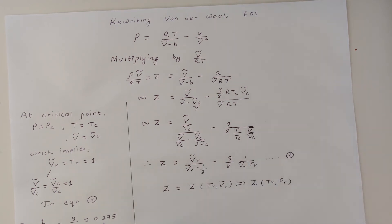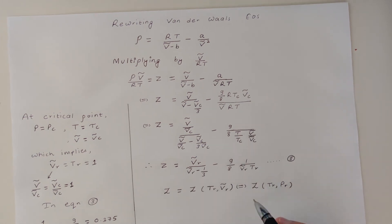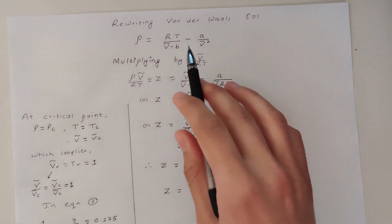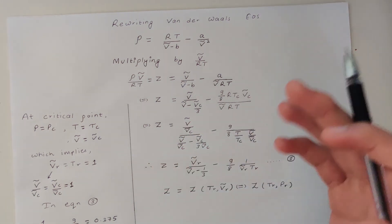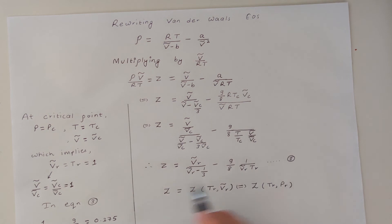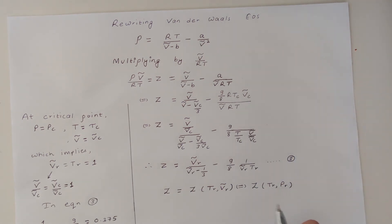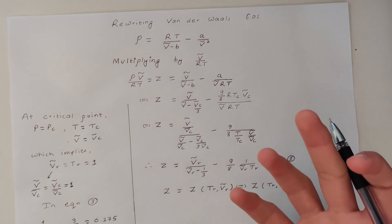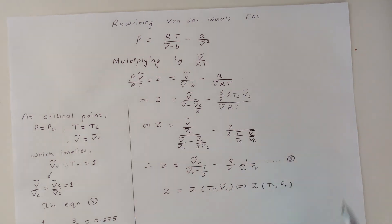This is exactly what the principle of corresponding states says. Furthermore, saying that Z is only a function of reduced temperature and reduced volume is equivalent to saying it is a function of reduced temperature and reduced pressure, because when the van der Waals equation is written in reduced conditions, the same reduced temperature and reduced volume always correspond to the same reduced pressure. This proves where the principle of corresponding states comes from.